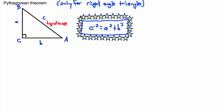You can name the sides whatever you like, but the hypotenuse squared equals the other side squared plus the other side squared. The order of a and b doesn't matter — b squared plus a squared is fine. But c, the hypotenuse, is always the one on its own. This is useful for finding a third side when you already know two sides.